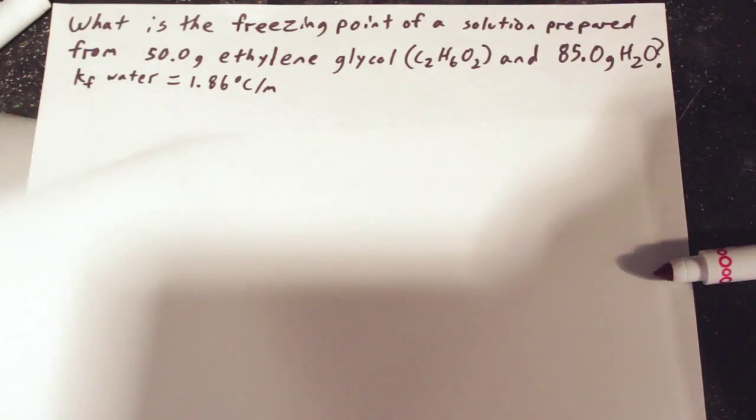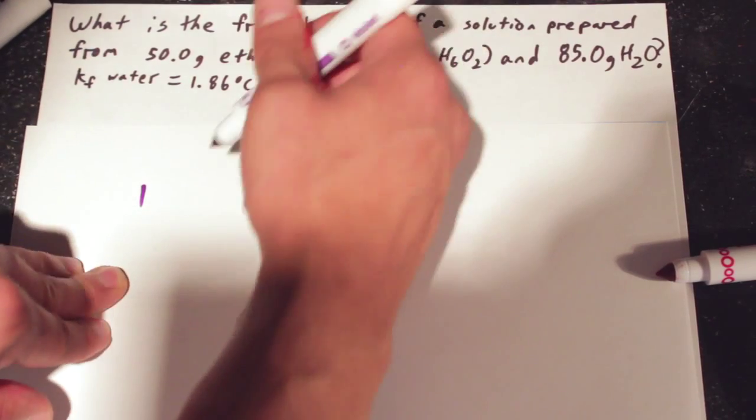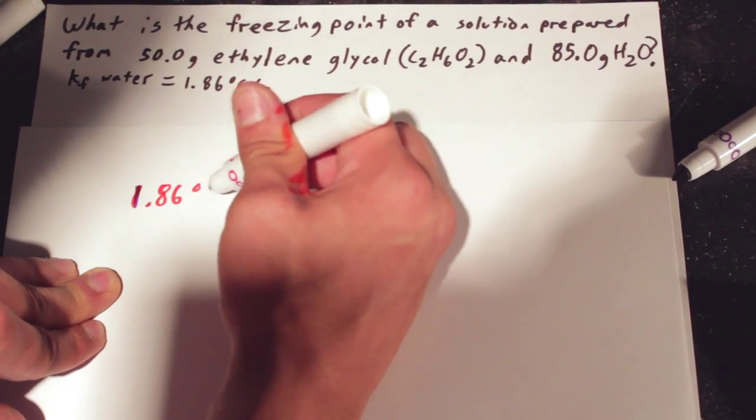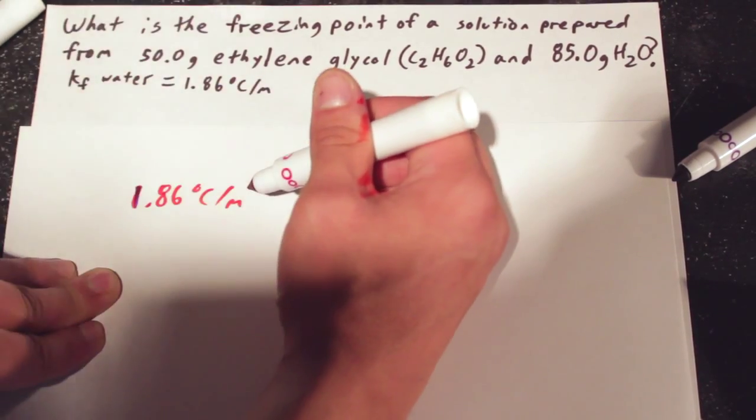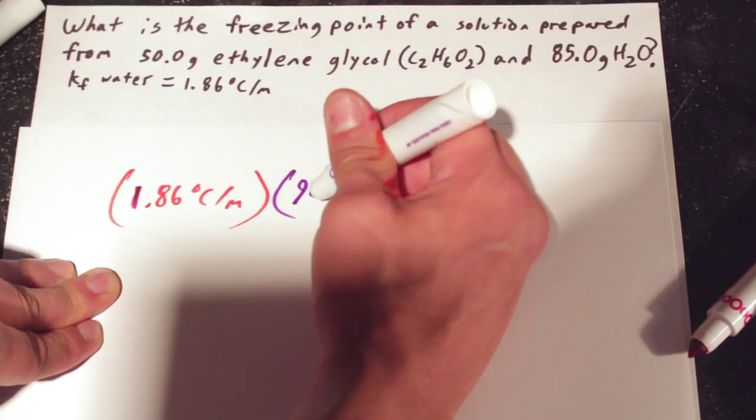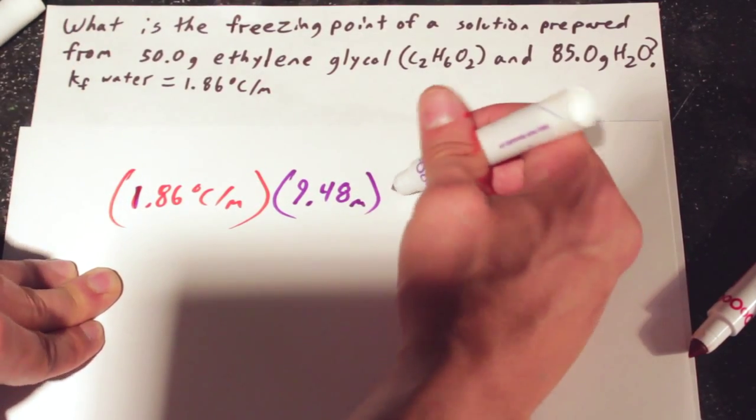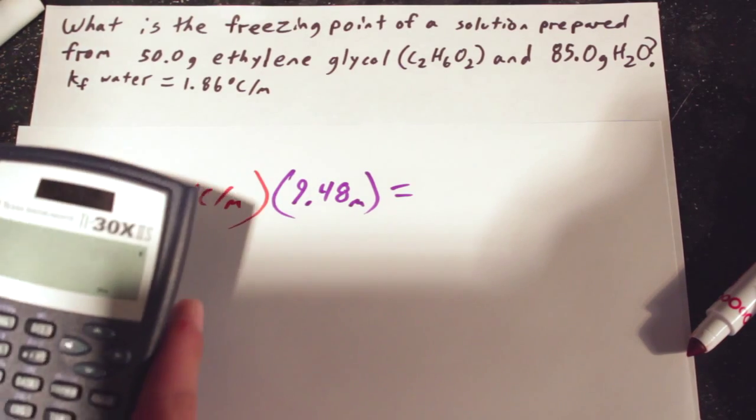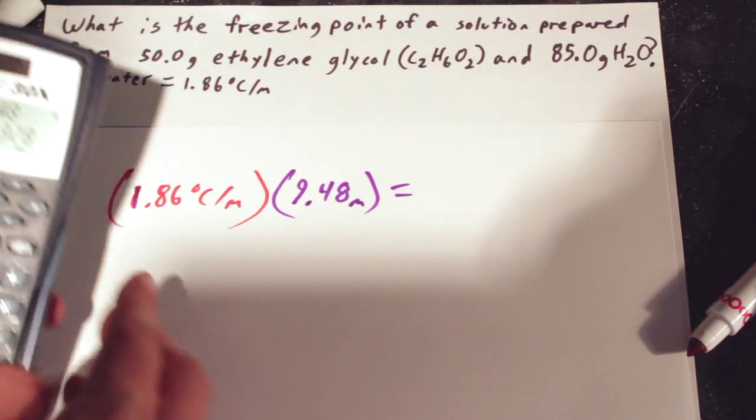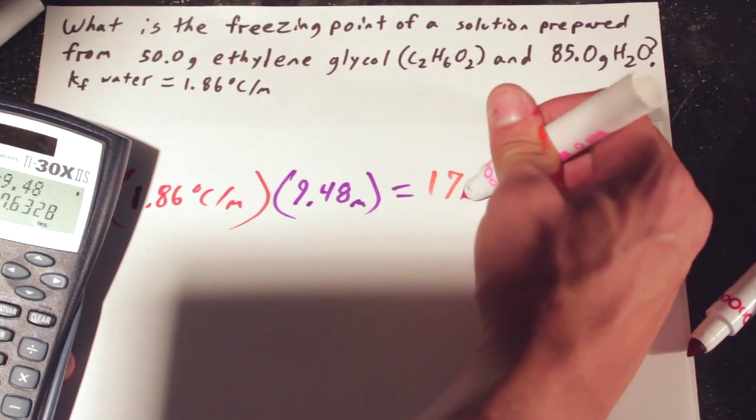And divide out 0.806 divided by 0.085 equals 9.48. From there, we take the KF of water, which is 1.86 Celsius per mol, and multiply it times the 9.48 mol. And that's going to give us an answer of 1.86 times 9.48.